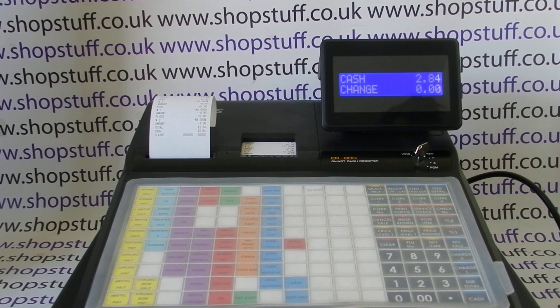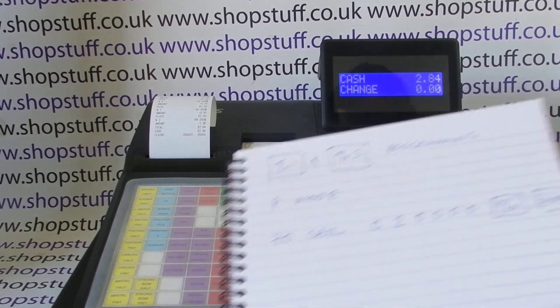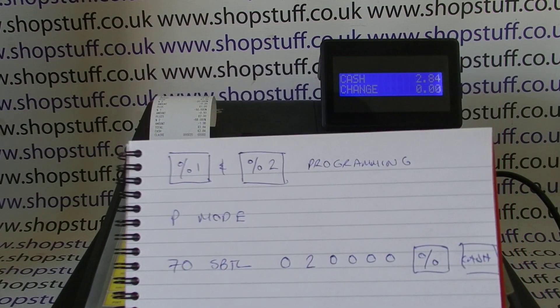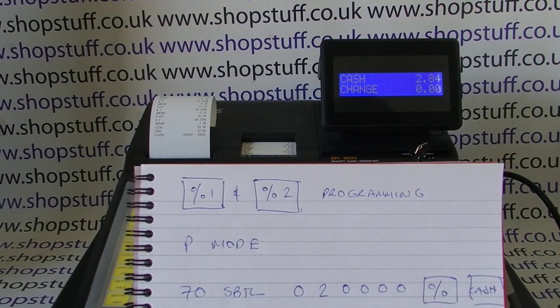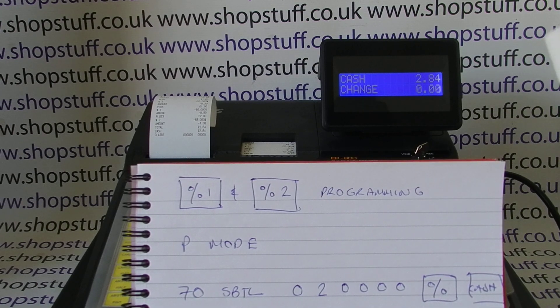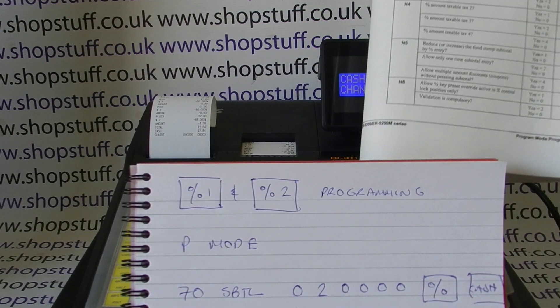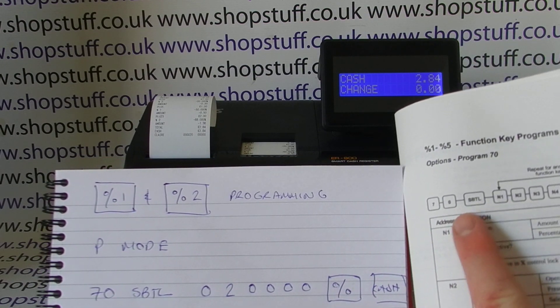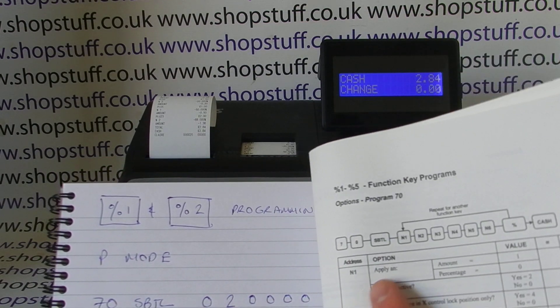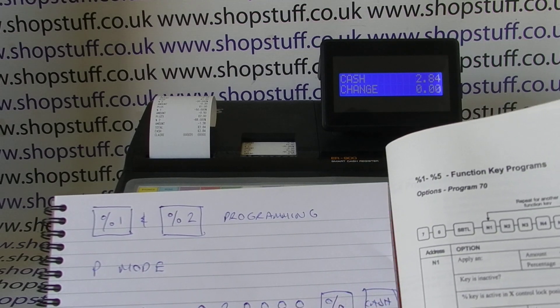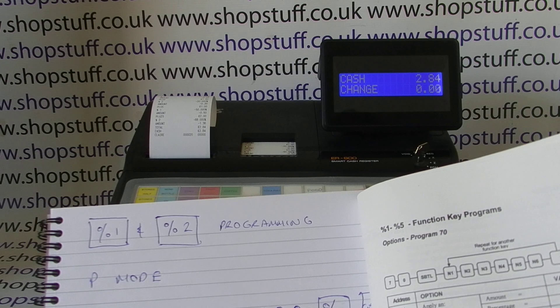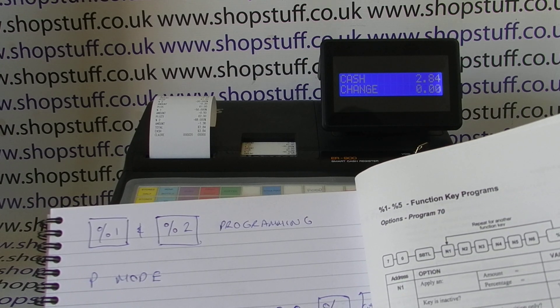What I've done is converted that chart into an easy-to-follow flowchart. The programming is done in P mode, and then each of the numbers — I've got 70, subtotal — I've converted the columns into numbers. The first zero is because I want to keep it as a percentage, I don't want the button to be inactive, and I don't want it to be only active in manager mode.